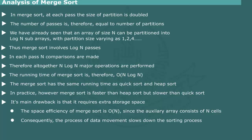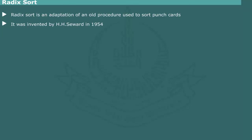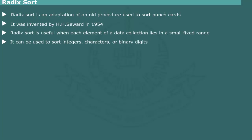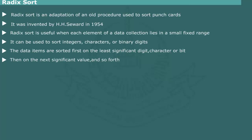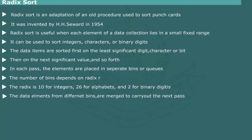Radix Sort: Radix sort is an adaptation of an old procedure used to sort punch cards on a mechanical sorter, invented by H.H. Seward in 1954. The radix sort method can be used on a data collection when all data items lie in a small fixed range such as decimal digits, characters, or binary digits. For each data item, a method is needed to identify the bin to be allocated in each pass. The range R is called the radix: R equals 10 for decimals, 26 for alphabets, and 2 for bits.